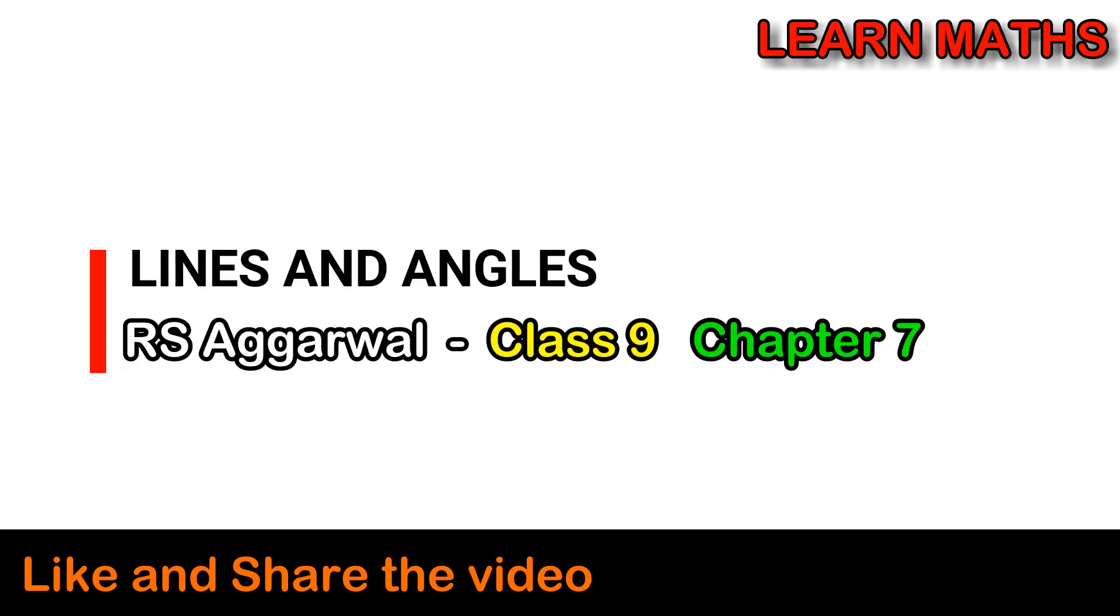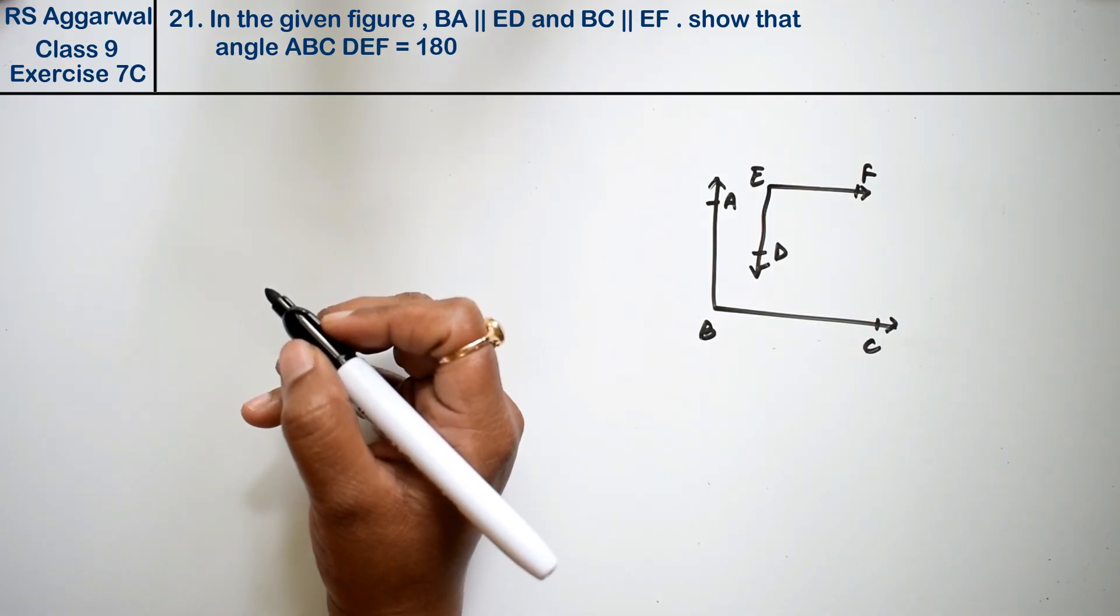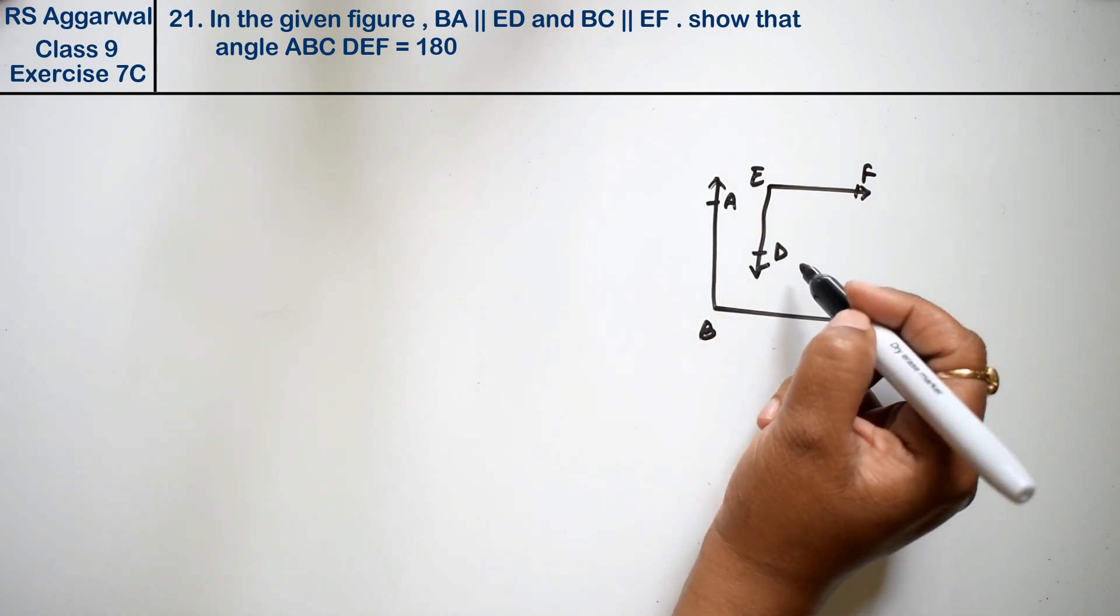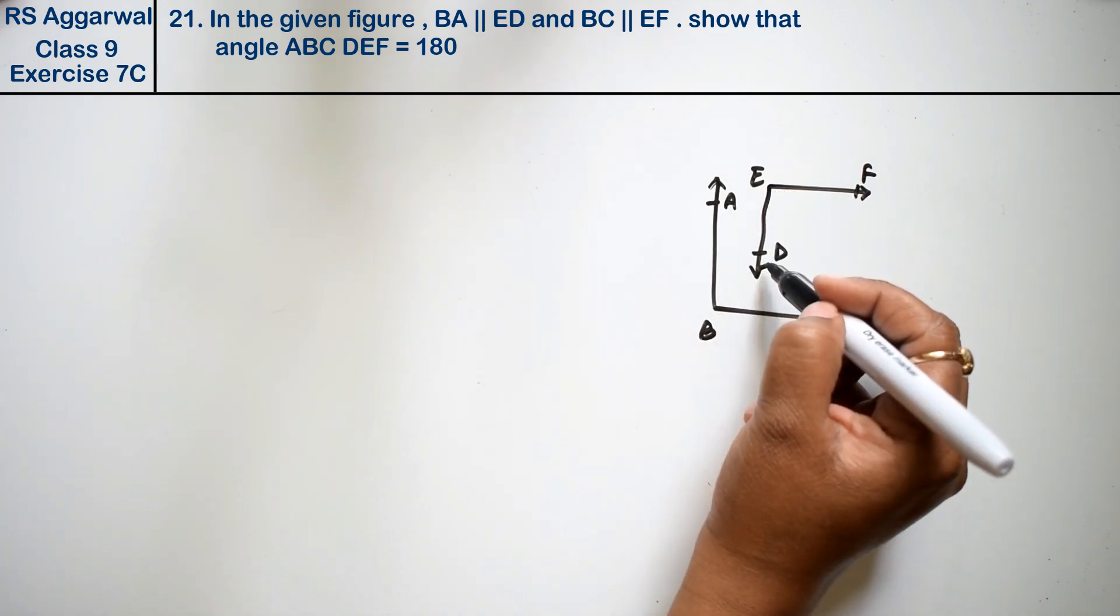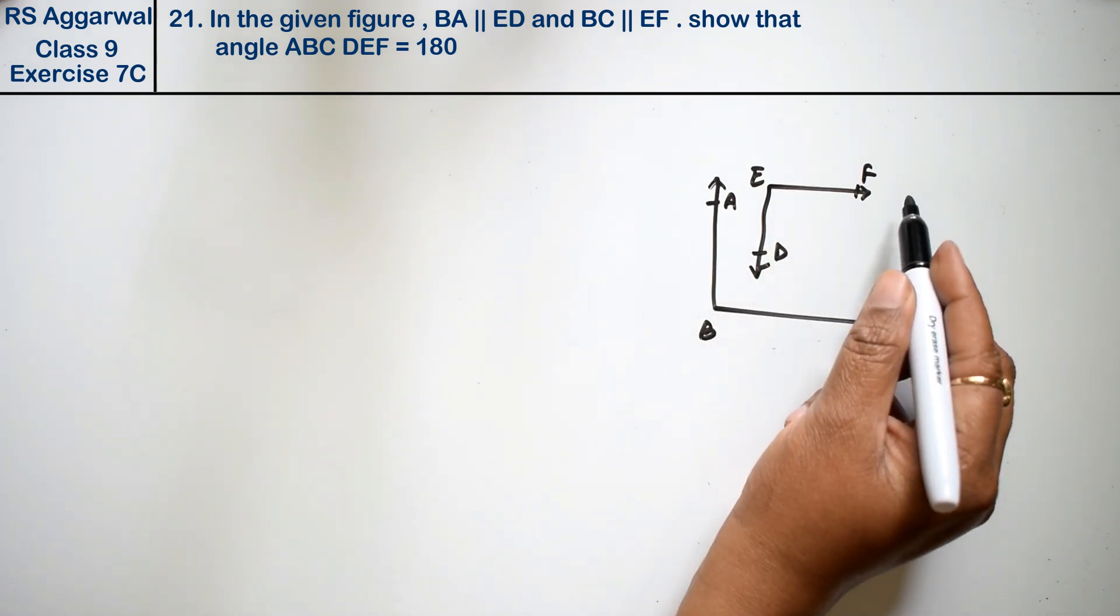Let's do question number 21 of exercise 7C on lines and angles. In the given figure, DA is parallel to ED, and BC is parallel to EF.